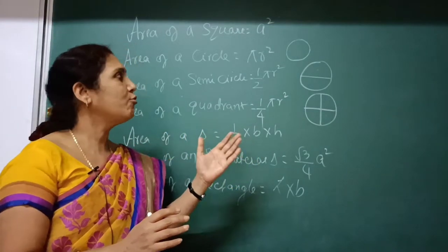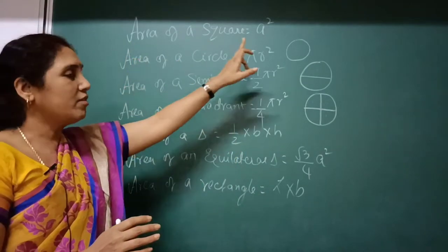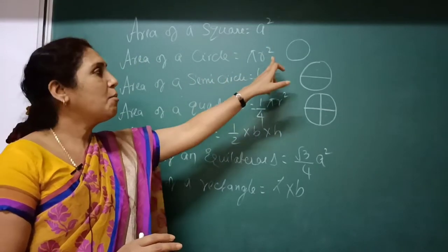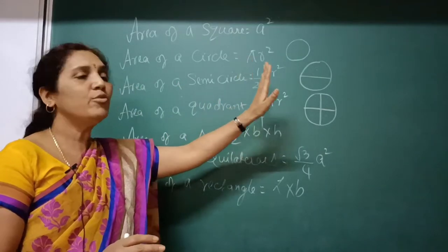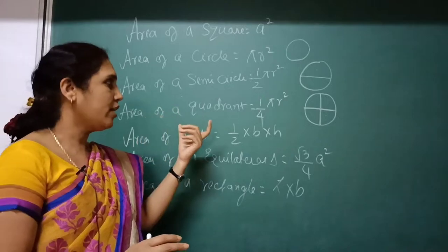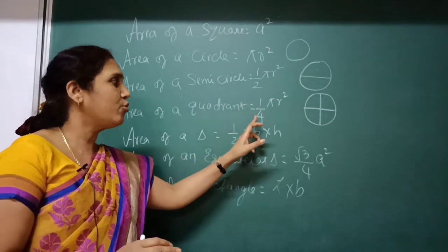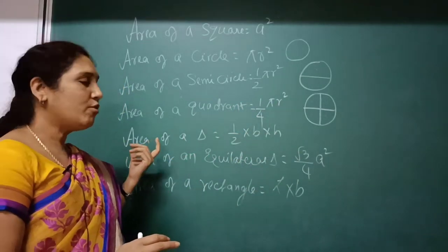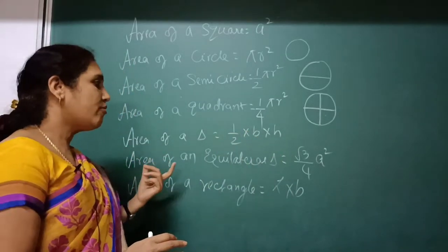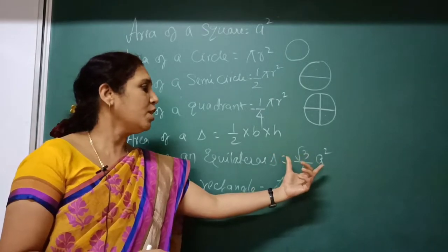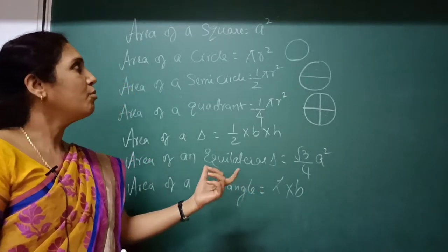In order to solve the problems, you will have to know some of the areas. The first one is area of a square which is A square, area of a circle is pi R square, area of a semicircle is half of pi R square, area of a quadrant—see this circle is divided into 4 equal parts—is 1 by 4 into pi R square, area of a triangle is equal to half into base into height, area of an equilateral triangle is equal to root 3 by 4 A square, and area of a rectangle is equal to length into breadth.